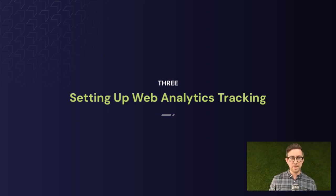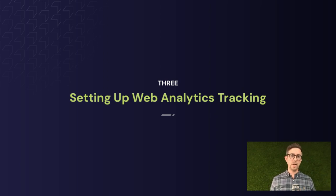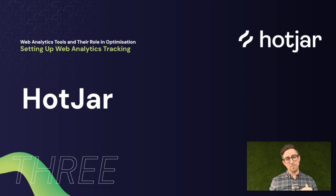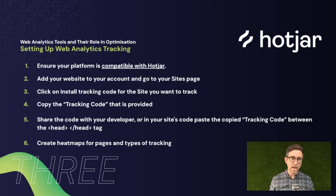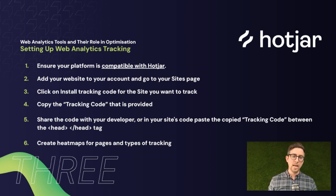With these tools it's all well and good talking about them, but setting them up and tracking is another element. I want to quickly cover how you set these up on your site. Starting with Hotjar first because it's probably the most straightforward. You want to ensure your platform is compatible with Hotjar — that link in the slides goes to a Hotjar page telling you if it is or not. Things like Squarespace and Shopify have plugins, and if you've got a bespoke or WordPress site you'll more than likely be able to integrate.